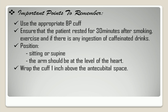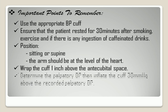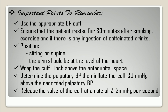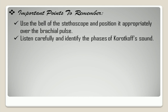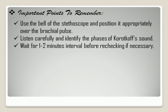Wrap the cuff 1 inch above the antecubital space. Determine the palpatory BP, then inflate the cuff 30 mmHg above the recorded palpatory BP or the point where the brachial pulse is no longer felt. Release the valve of the cuff at a rate of 2 to 3 mmHg per second. Use the bell of the stethoscope and position it appropriately over the brachial pulse. Listen carefully and identify the phases of Korotkoff sounds. Wait 1 to 2 minutes interval before rechecking if necessary.